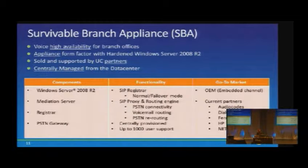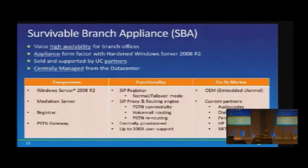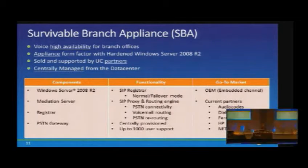The key functionality the SBA provides is a SIP registrar. By moving registration services away from presence and conferencing, we can place registration services on these smaller survivable branch appliances. In normal operating mode, clients register against the SBA's SIP registrar and use the WAN for conferences and other activities. When CAC limits are exceeded on the WAN connection, the next call is routed out through the PSTN, unless the user has an override policy set. The SBA also handles PSTN routing and voicemail routing.